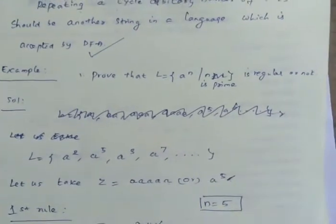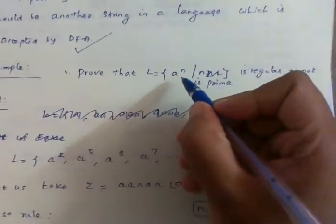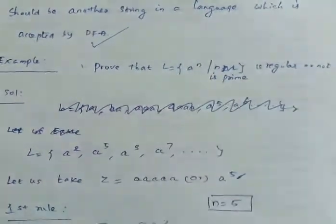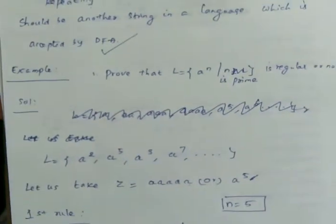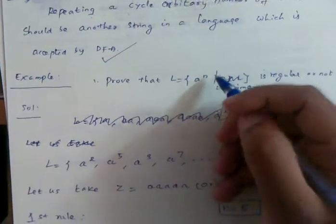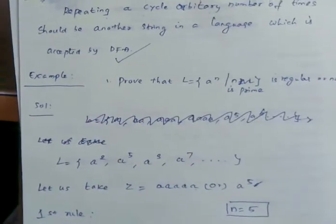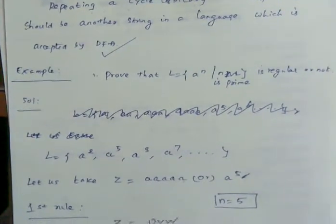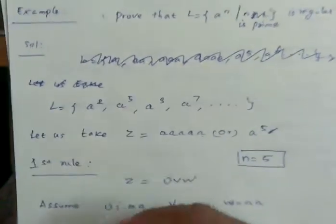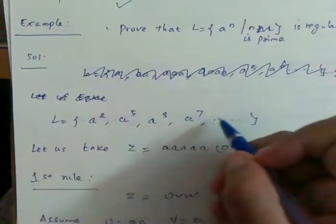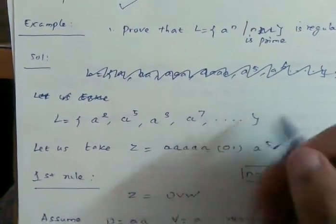Prove that L equals a power n, where n is prime, is regular or not. The language is equal to a power n for prime numbers — such as a^2, a^5, a^3, a^7 — and we need to prove whether the language is regular or not.